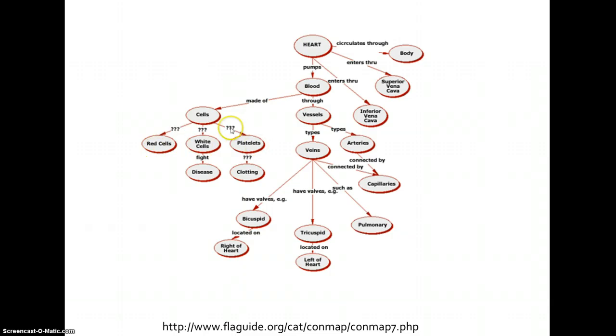For example, this student knows that blood is made of cells and somehow red cells, white cells and platelets are involved, but not really sure on the relationship and not really clear on the relationship between platelets and clotting. As an instructor, having students create a concept map enables you to see where they're struggling, where there are gaps in their knowledge, or where they have misconceptions.